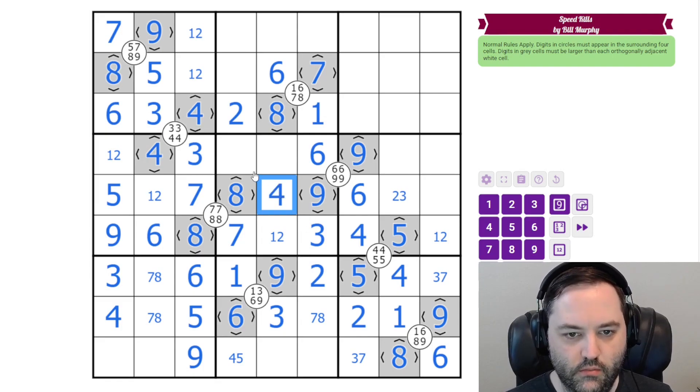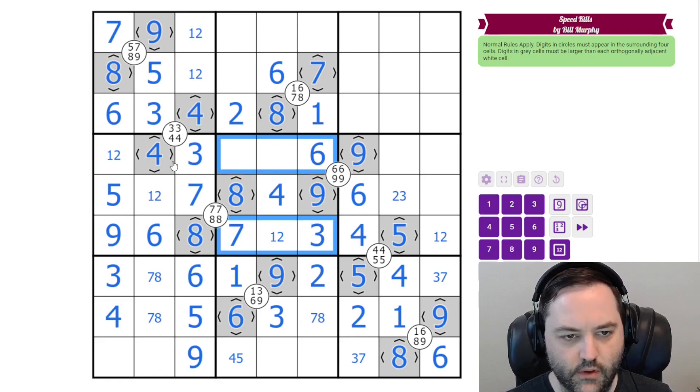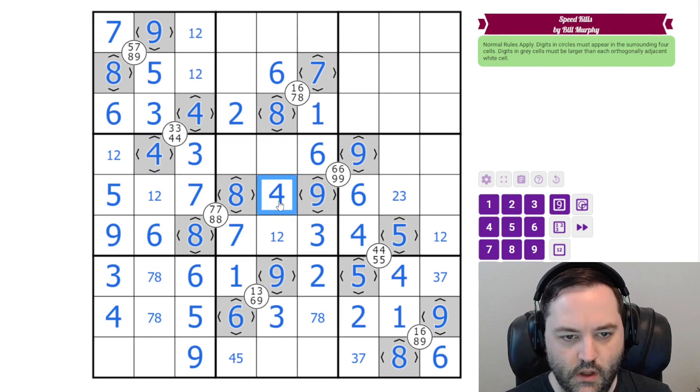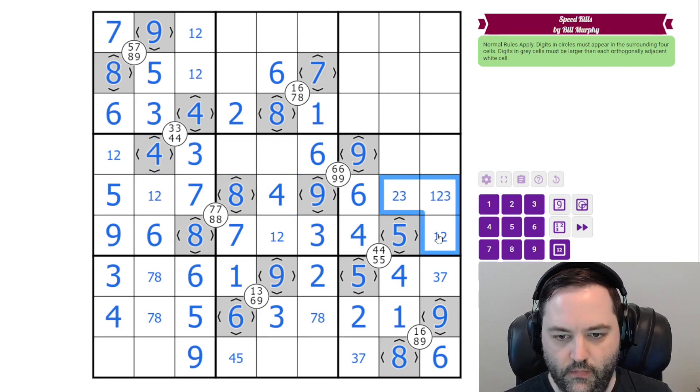And we could also have looked at the box. So this is also 1, 2 or 3. That gives us all the 1, 2, 3's in that box.